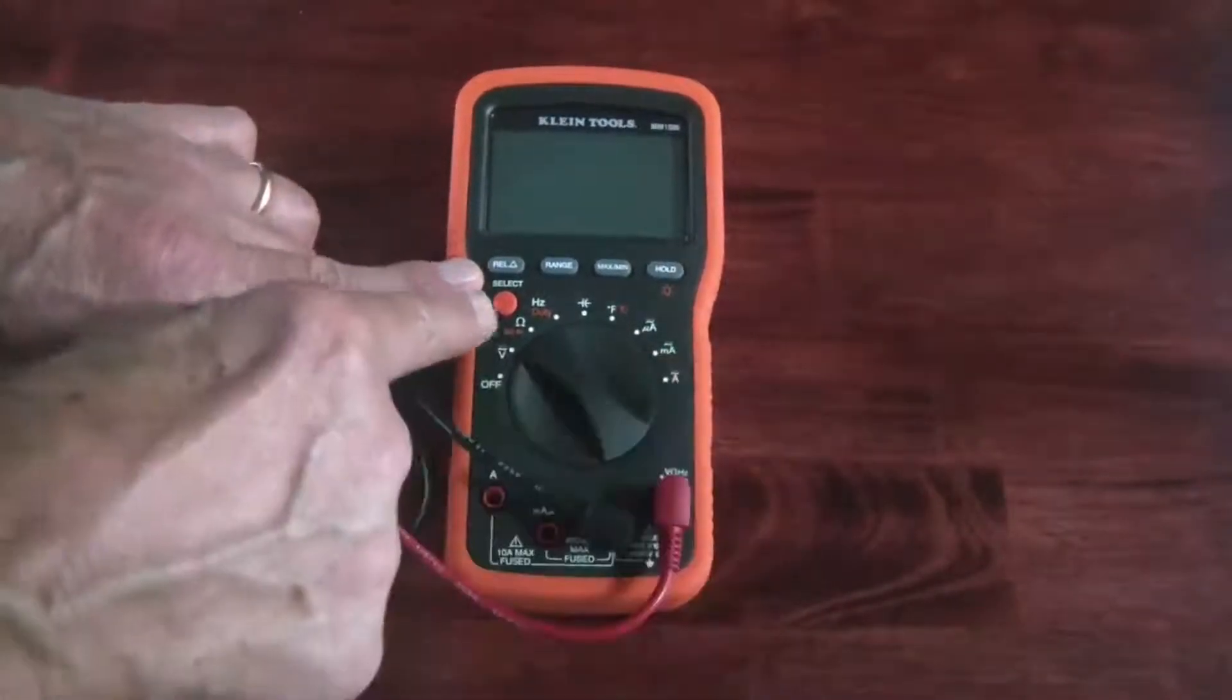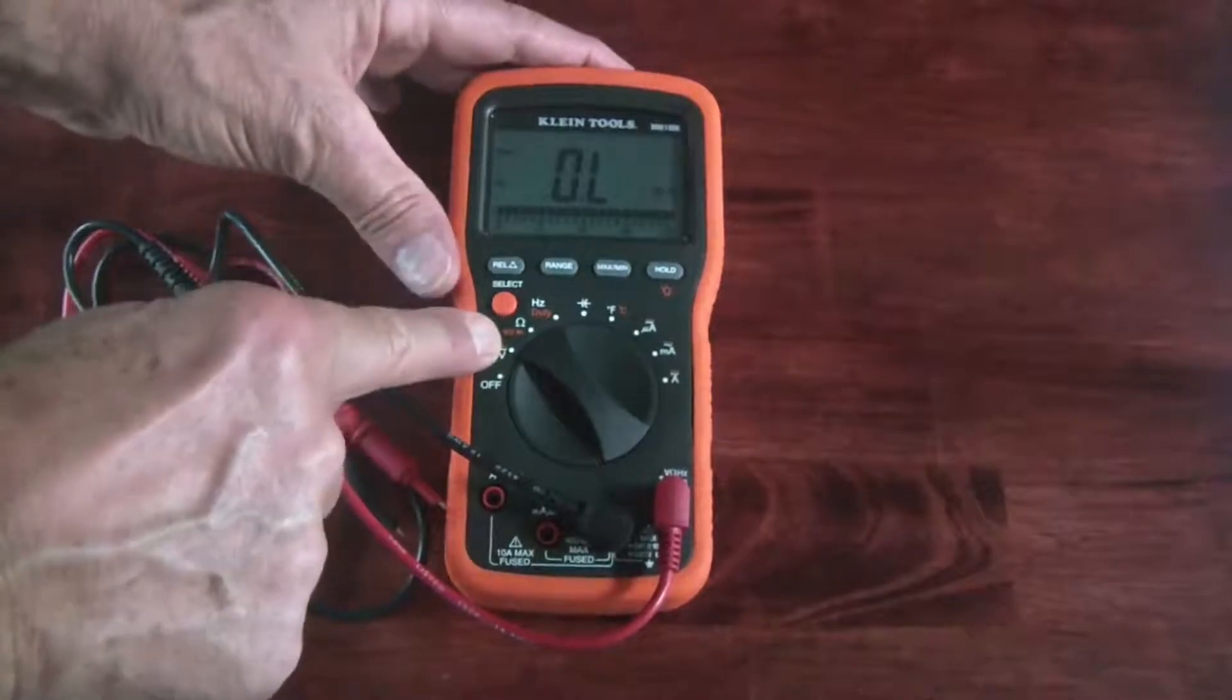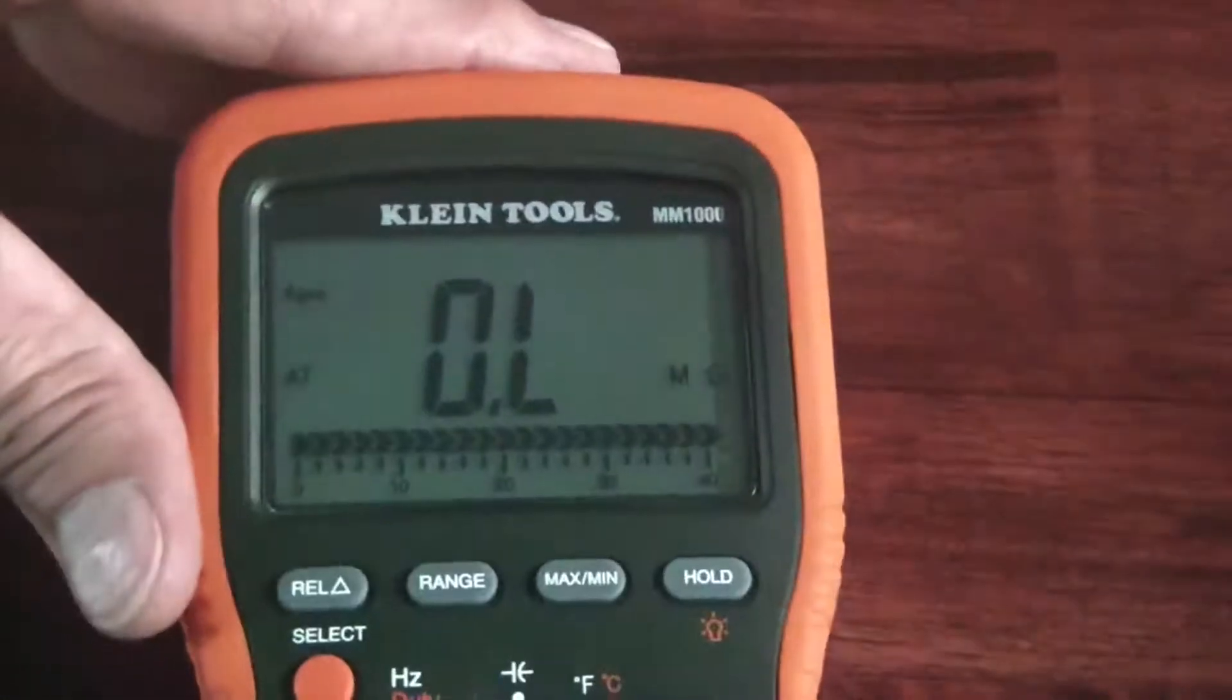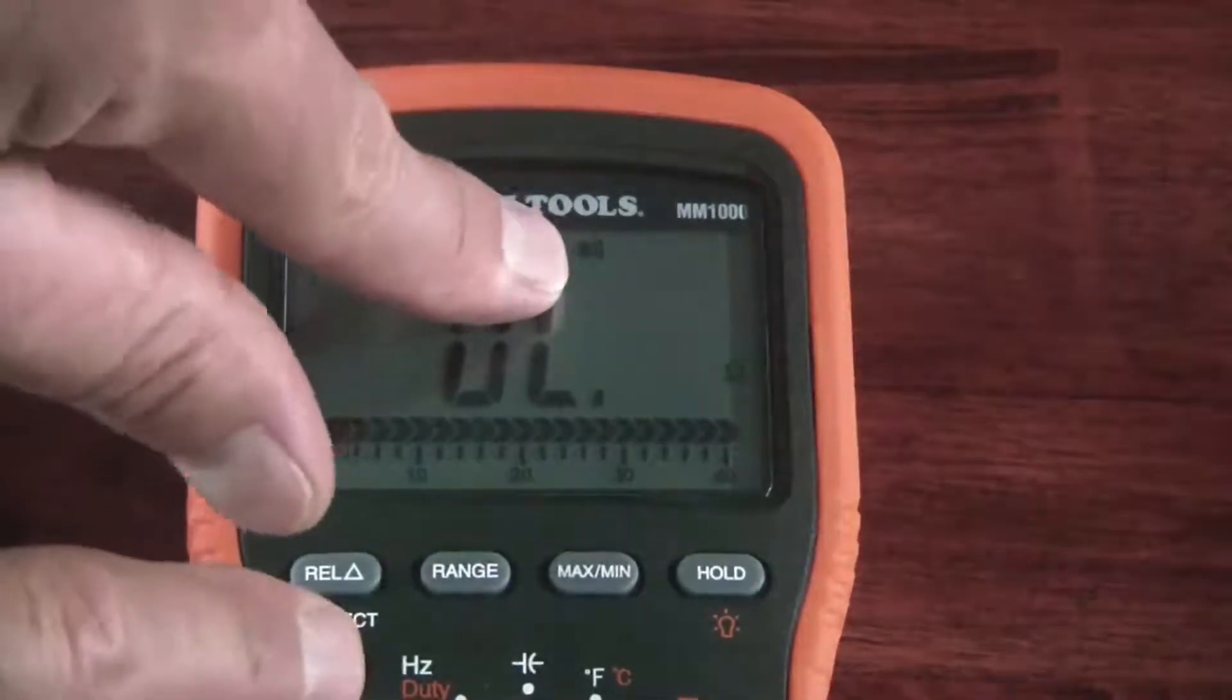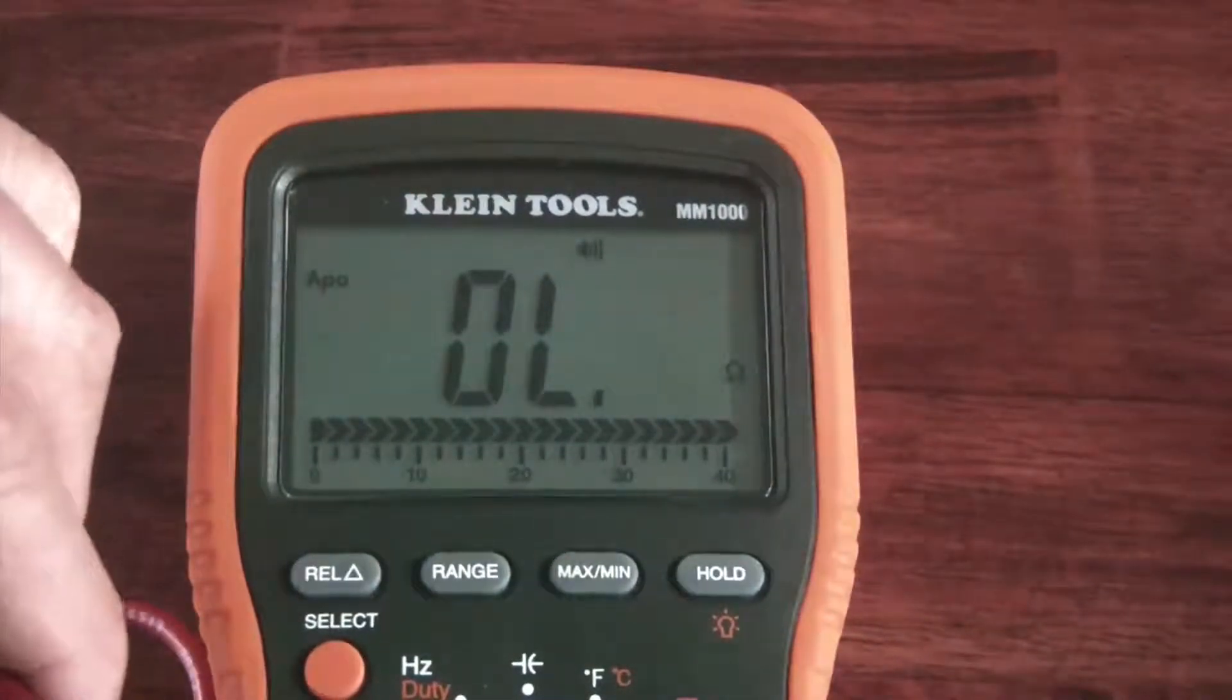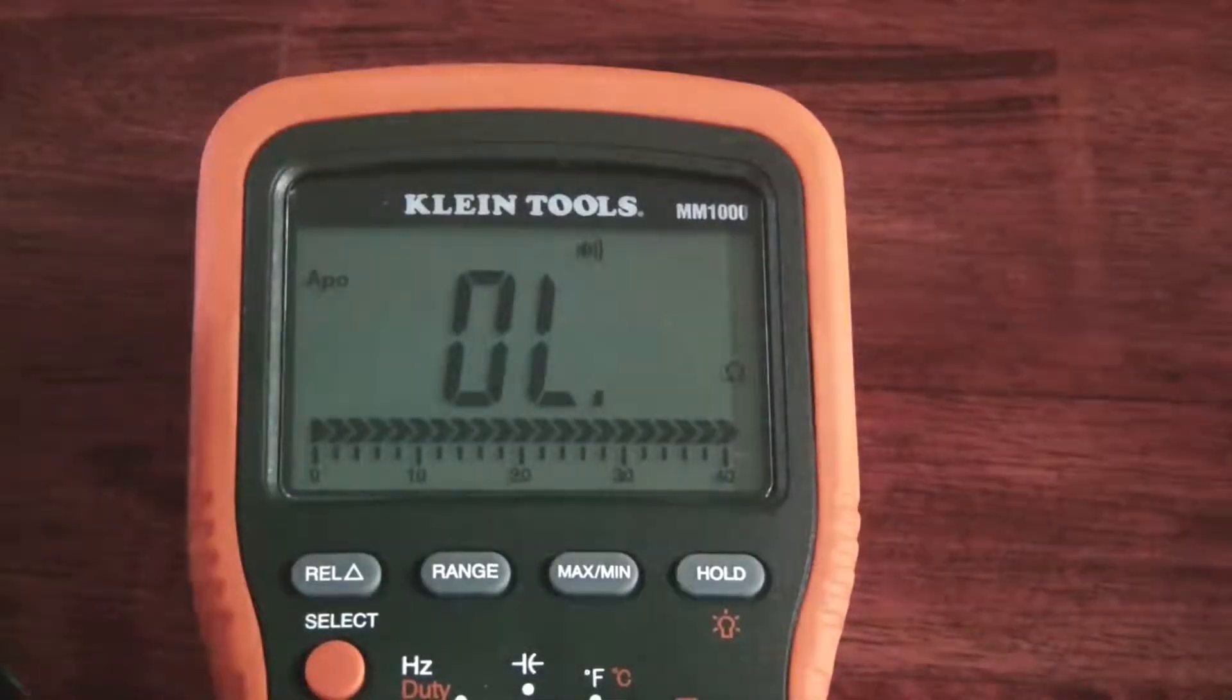So I'll turn this on to the ohms indicator here, and then underneath it in red, shows you that there's a different function. So a different function available. So I just push the select button, and then you can see that this symbol up here changed to what looks like a speaker. And so that should let me check the continuity here. And you can hear the tone. So that works.